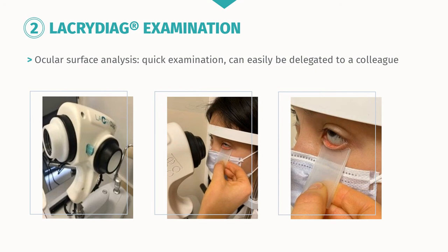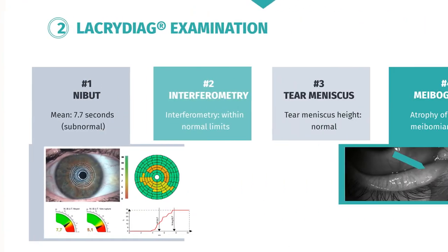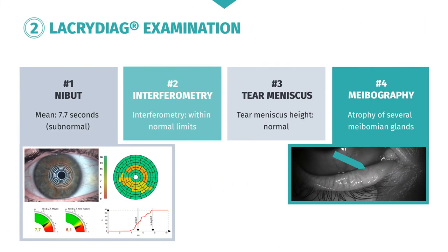It's a quick examination that can easily be delegated to a colleague. The lacri-diag can be used to analyse the various layers of the tear film. Non-invasive breakup time or NIBUT is subnormal in this patient, as is interferometry and tear meniscus height. The meibography images show us that several meibomian glands are atrophied.